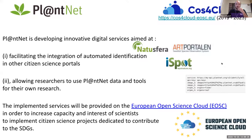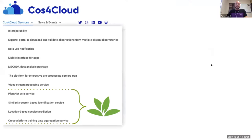In the context of a new European project called Cost4Cloud, PlantNet develops several computational services to facilitate the integration of automated identification services in other citizen science platforms such as NatureSphere in Spain, iRecord in the UK, and Artportalen in Sweden. We also contribute to more broadly using PlantNet data and tools to increase scientists' capacity to implement citizen science projects. A version of these services will be deployed on the European Open Science Cloud (EOSC).